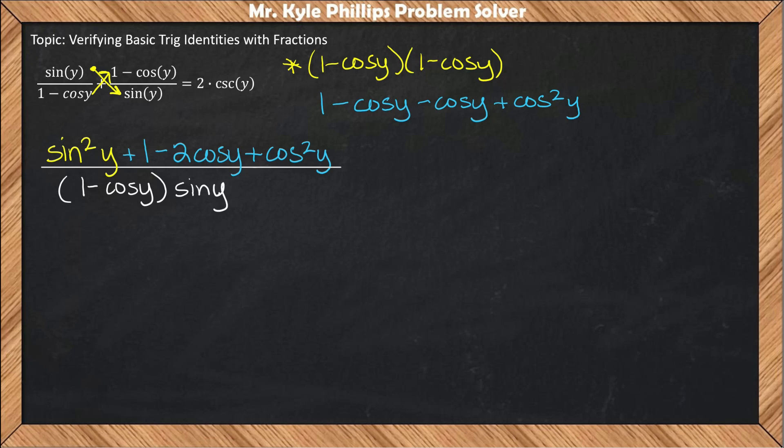Looking at the numerator I want to find ways to simplify as much as possible. I know that sine squared y plus cosine squared y is part of a Pythagorean identity and that equals 1.